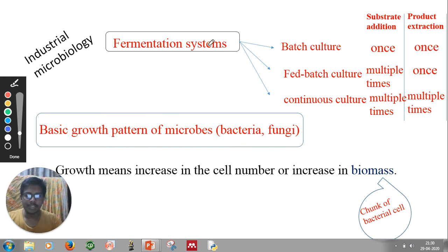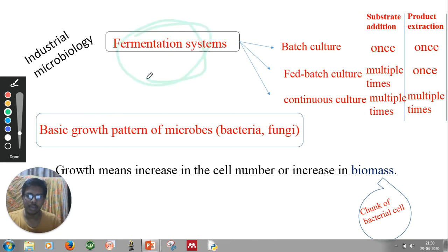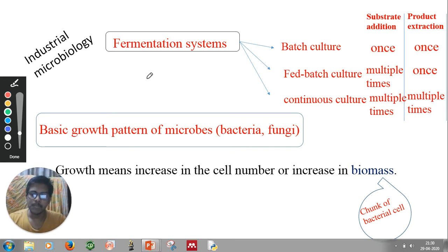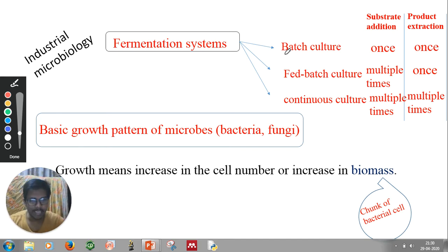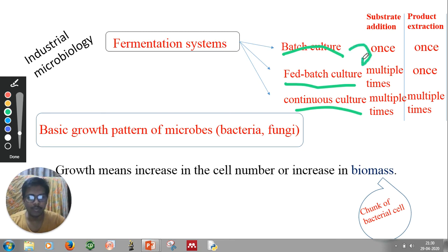Fermentation systems, as discussed in the previous video, involve a reactant from which you get a product using a bacterial culture. This is important for industrial-scale applications of microbiology. Fermentation systems have three procedures normally followed at industrial scale: batch culture, fed-batch culture, and continuous culture. This is an evolution — from batch to fed-batch and then to continuous culture.